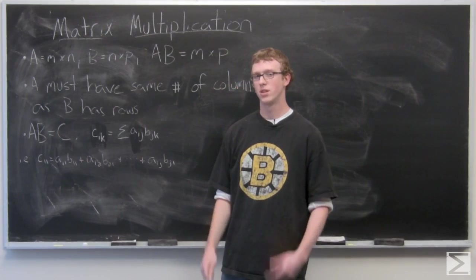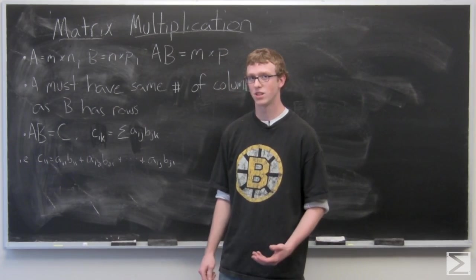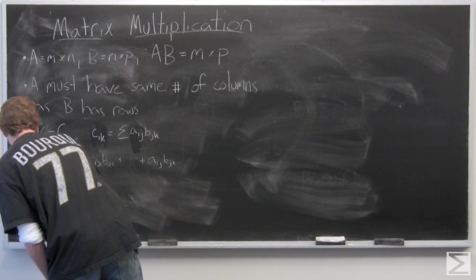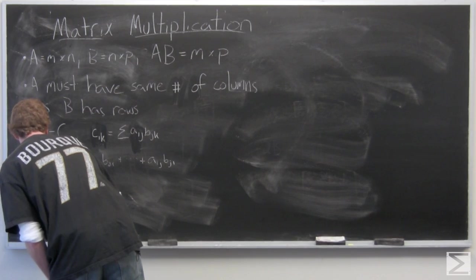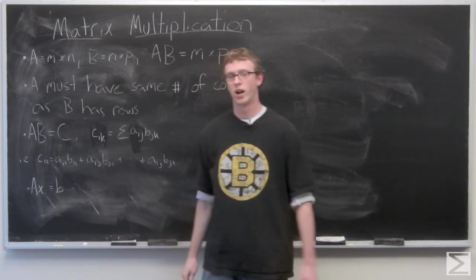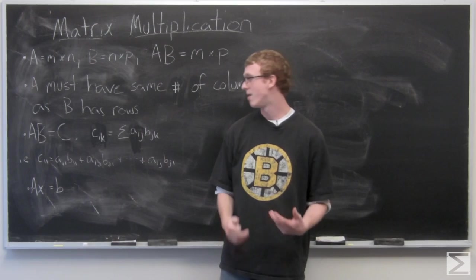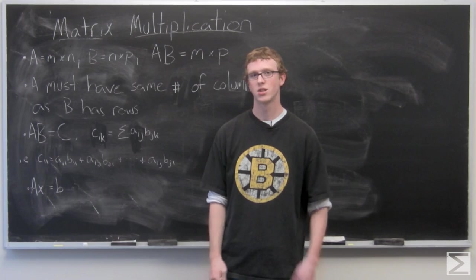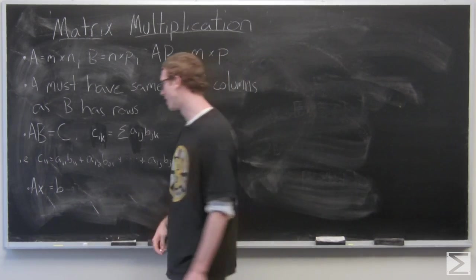Now what I was talking about with the systems of equations, a lot of times you'll see it denoted as this, where A is an M by N matrix and X is an N by 1 matrix. So it only has one column, it's denoted like this normally.